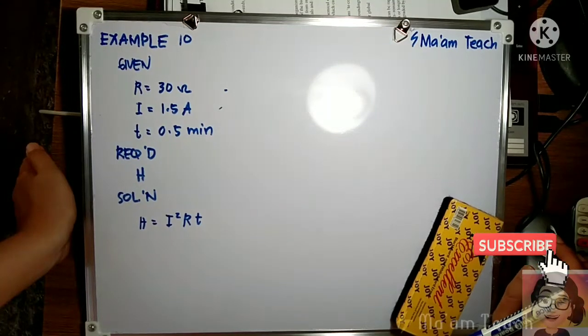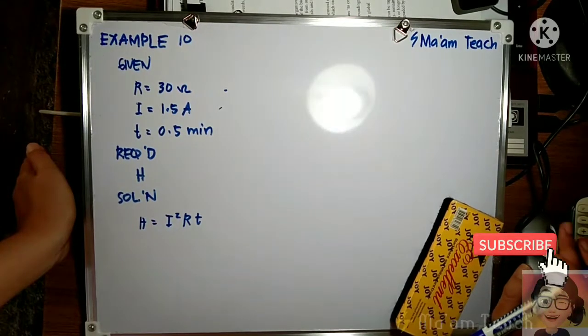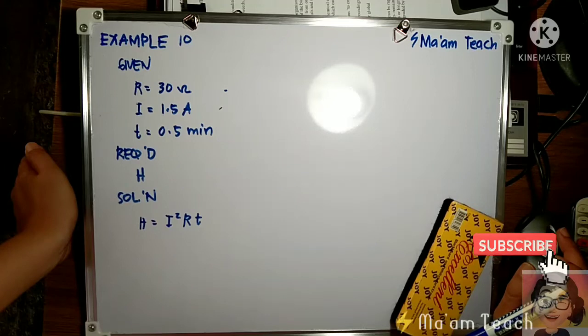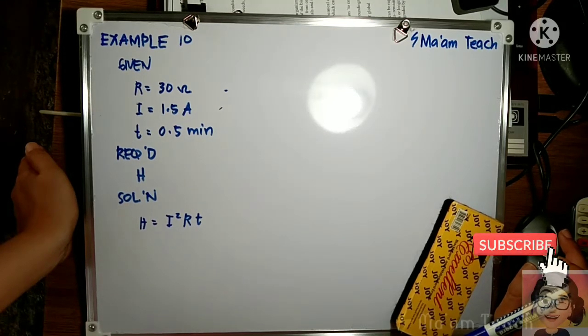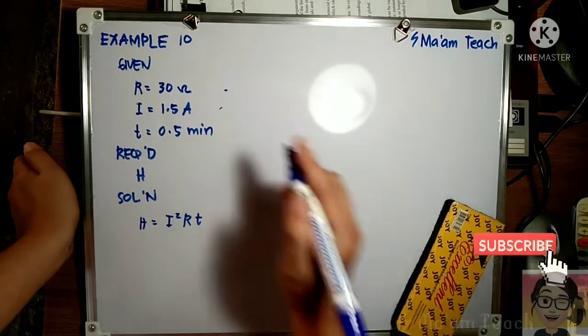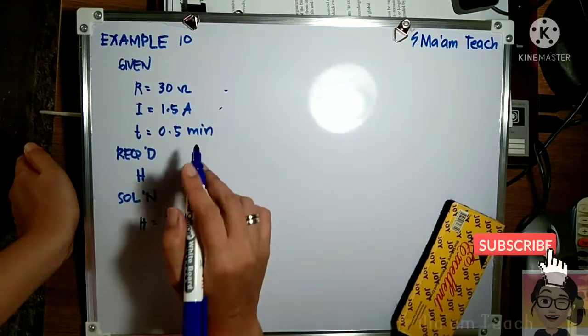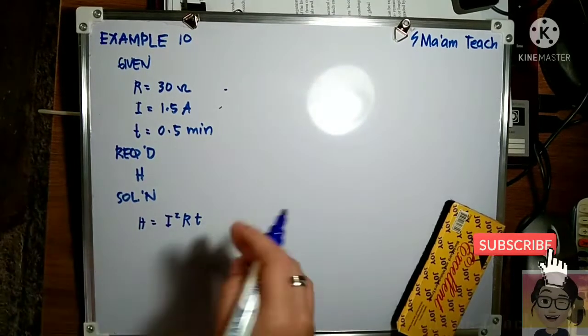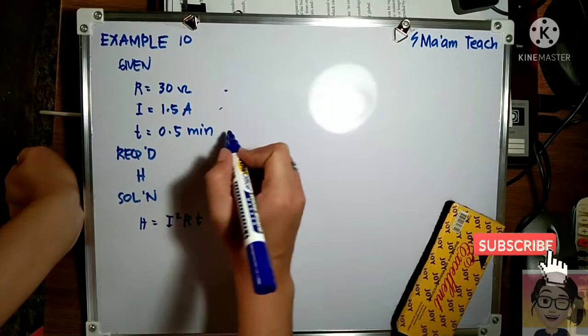Heat is expressed in joules or it could be in calorie or kilocalorie. But when we use current in amperes, resistance in ohms, and time in seconds, we will have the unit joule. So that's our target.